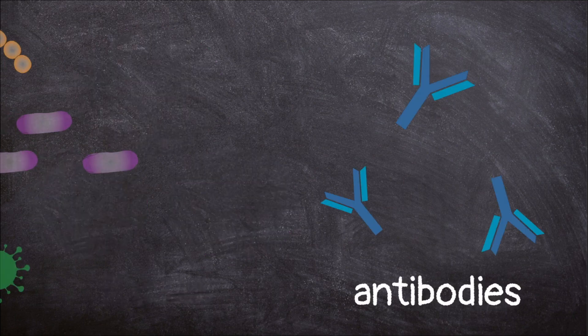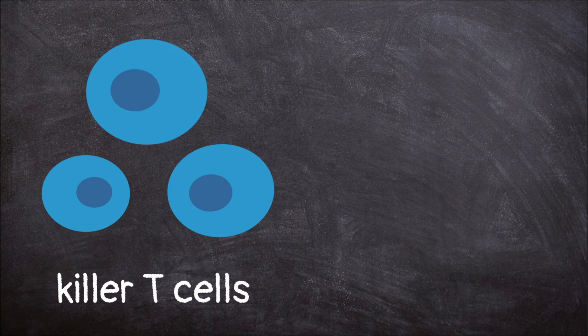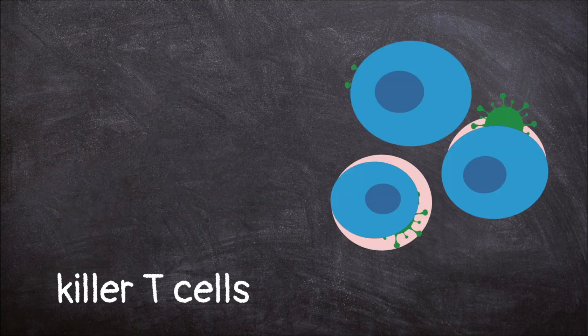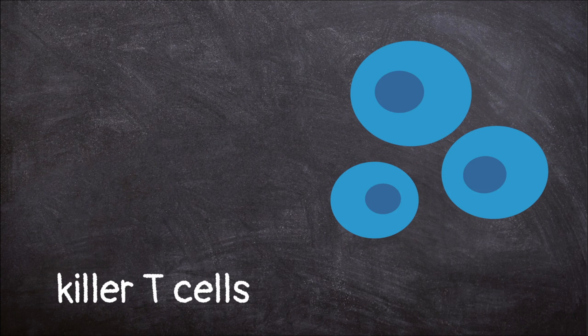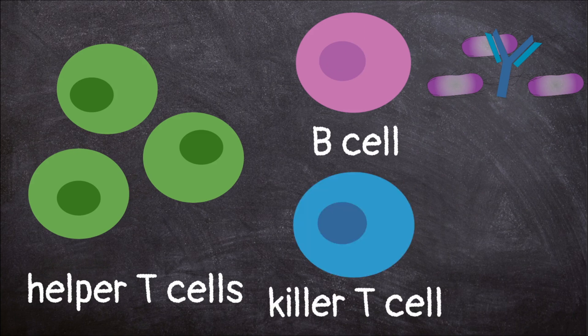Killer T cells get rid of good cells that have been infected by the antigens. Helper T cells tell the B cells to start making antibodies and the killer T cells to attack.